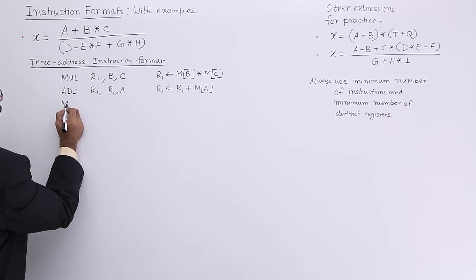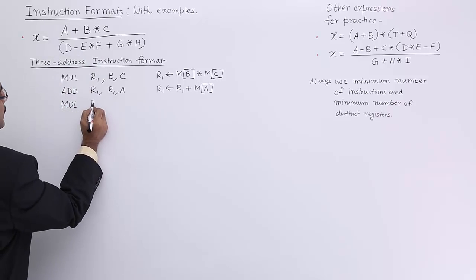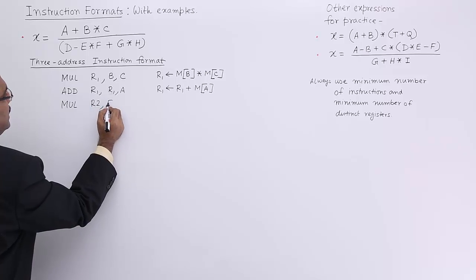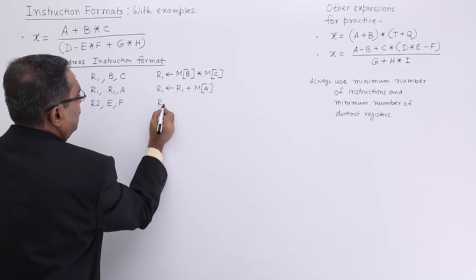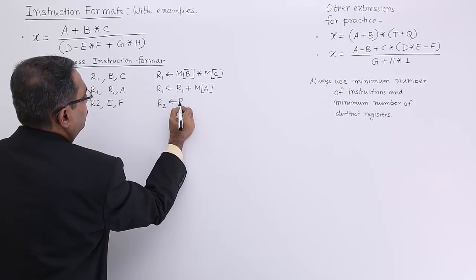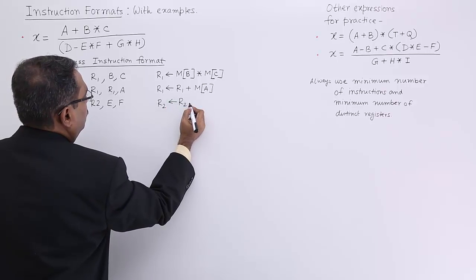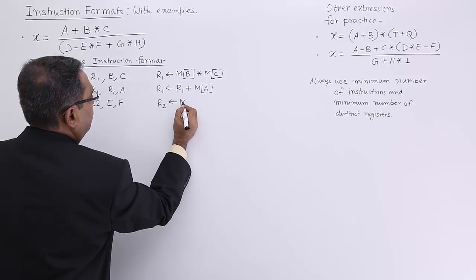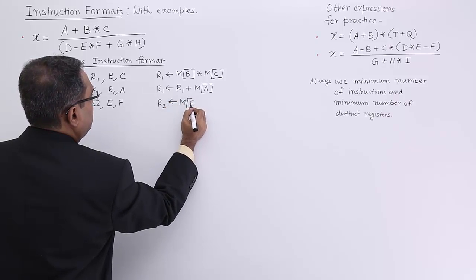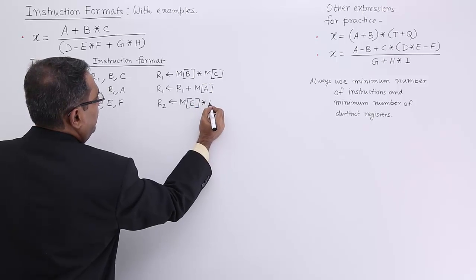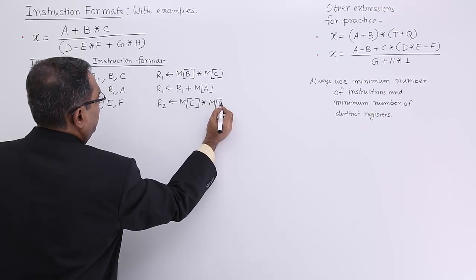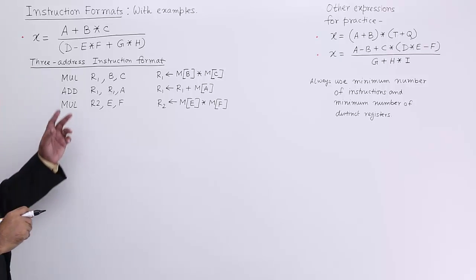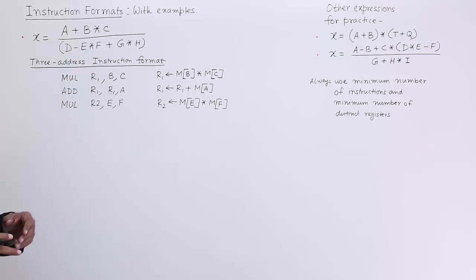Go for mul, say R2, E and F, and it is nothing but R2 is equal to memory content for the variable E and memory content for the variable F. EF multiplication has been done and kept in R2.